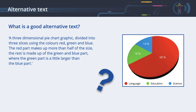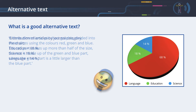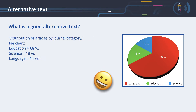A pie chart is made to communicate numbers in a visual form. If we cannot use the visual form, why not communicate the numbers directly? Here is a better approach: Distribution of articles by journal category. Pie chart. Education equals 68%. Science equals 18%. Language equals 14%. This is exactly the message the image contains. If the same information is communicated in the text or a caption under the image, then there is no need for alternative text at all.